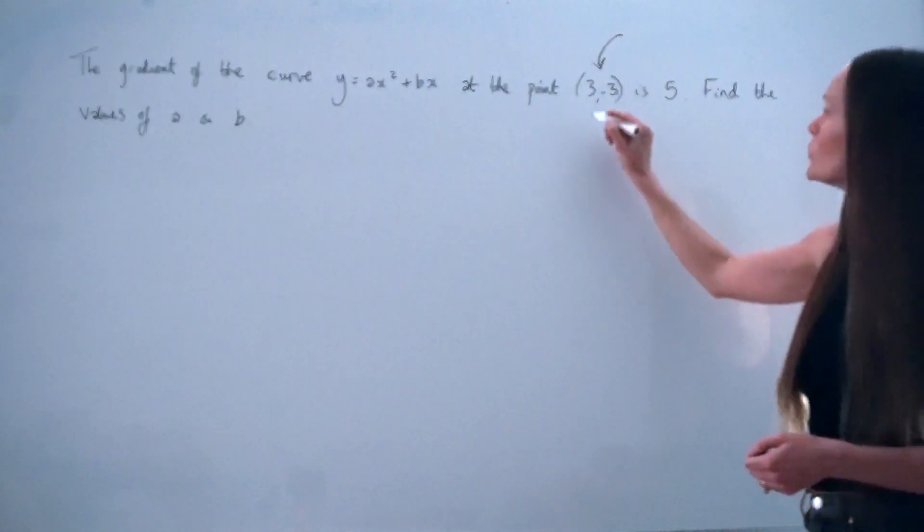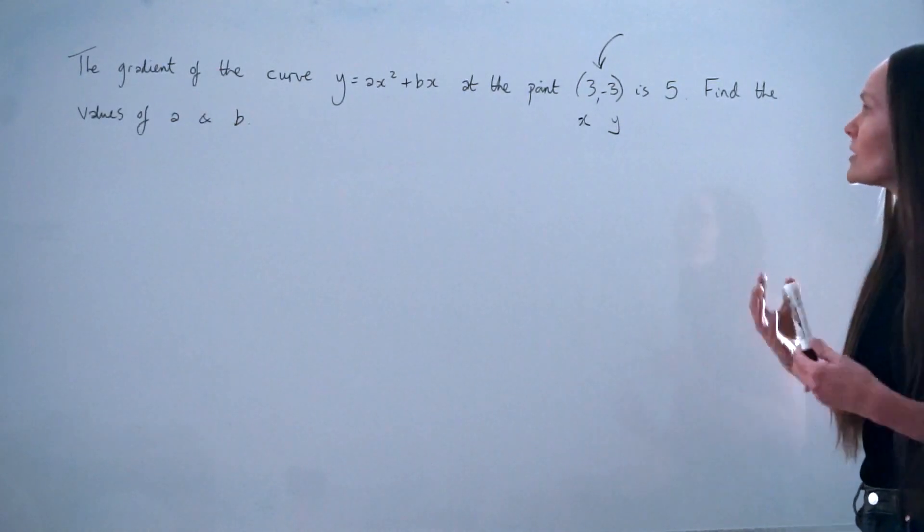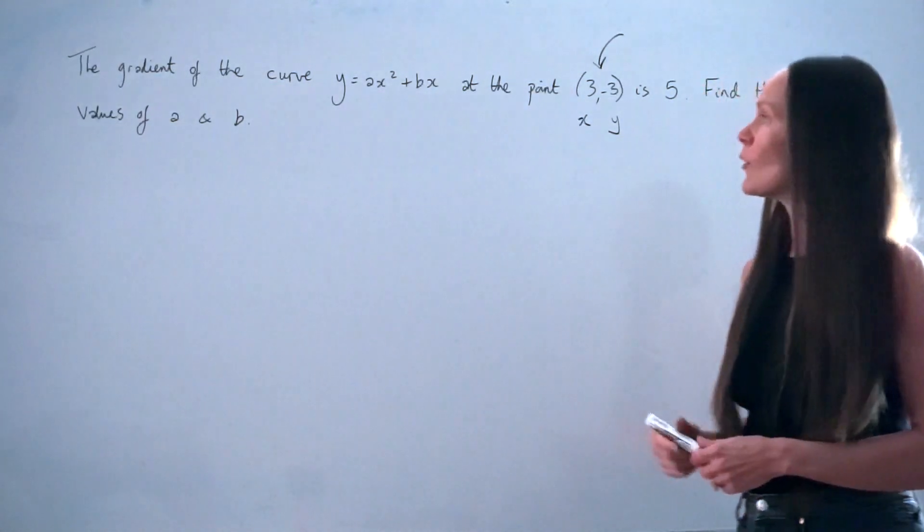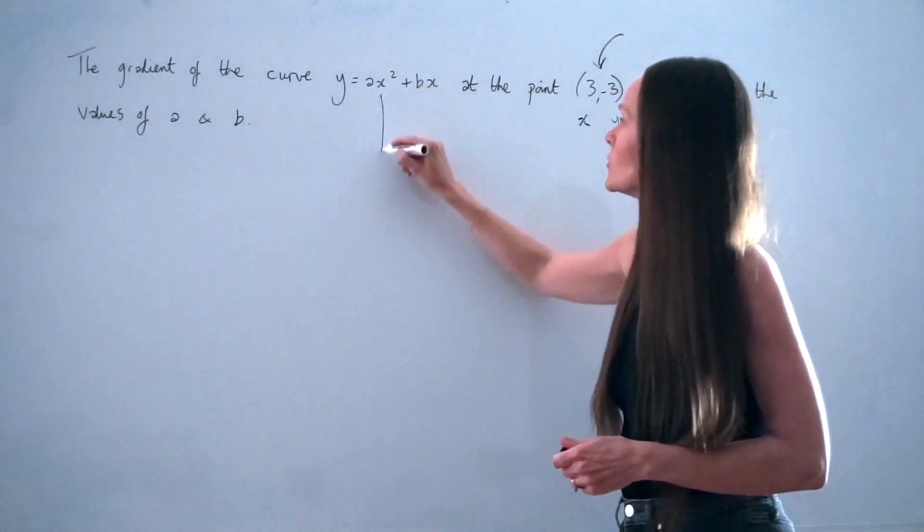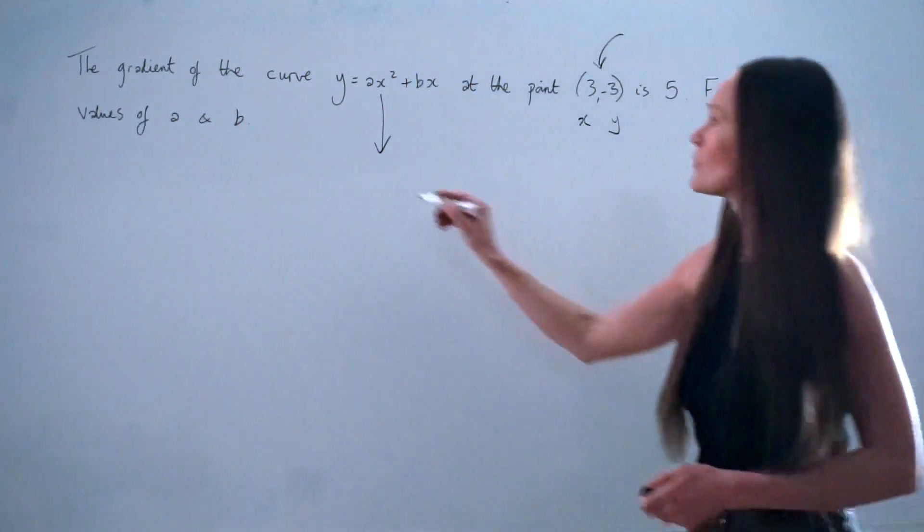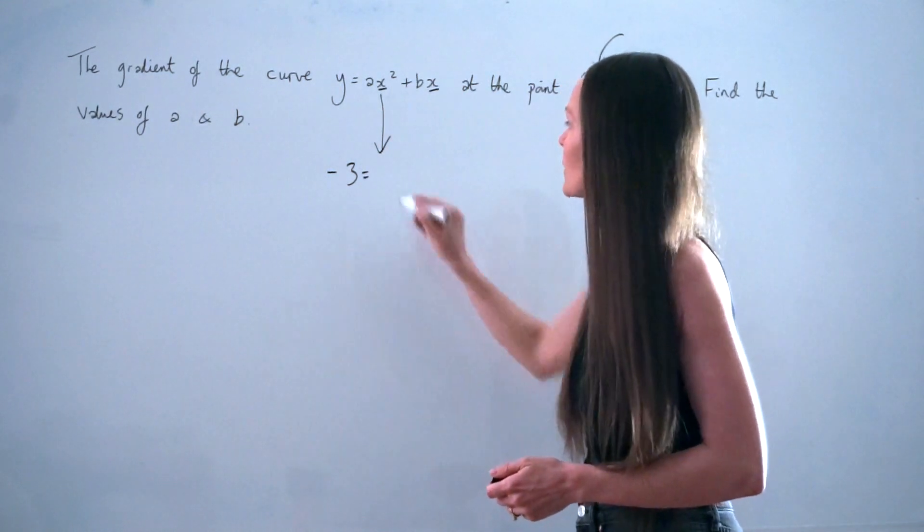When x is equal to positive 3, y is equal to negative 3. You can start by substituting those numbers into the equation of the curve. So I'm going to replace the letter y with negative 3, and I'm going to replace these two x values with positive 3.